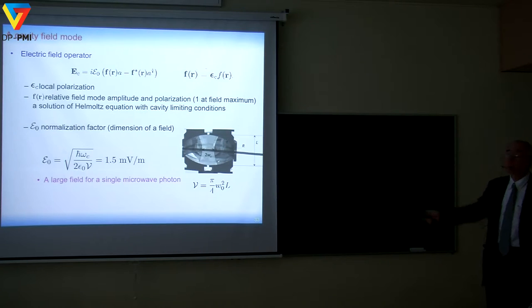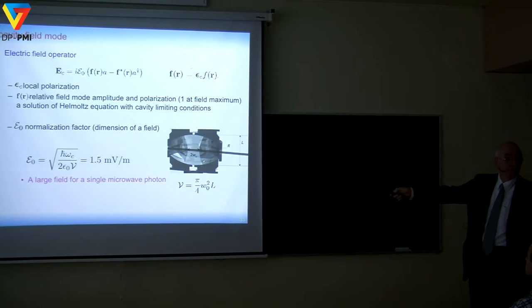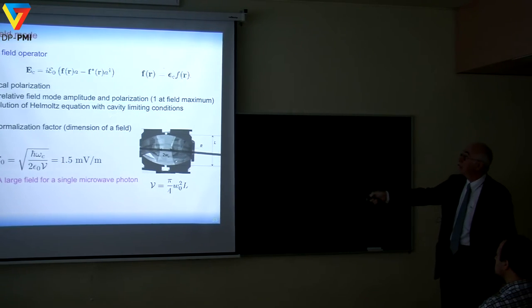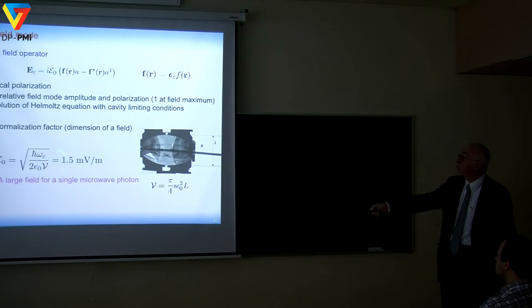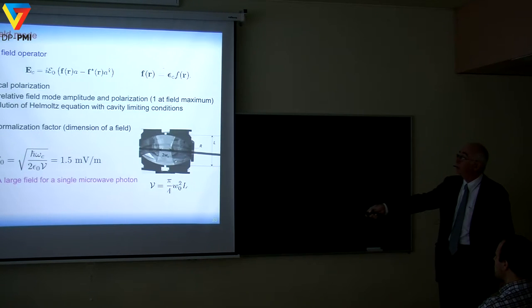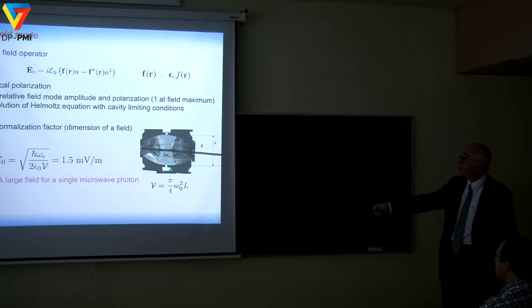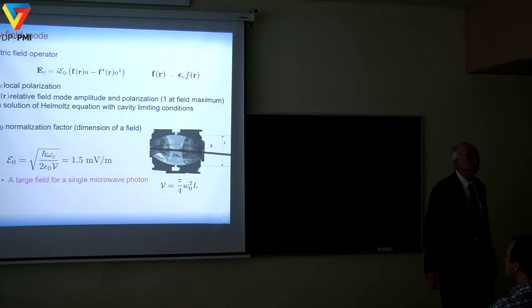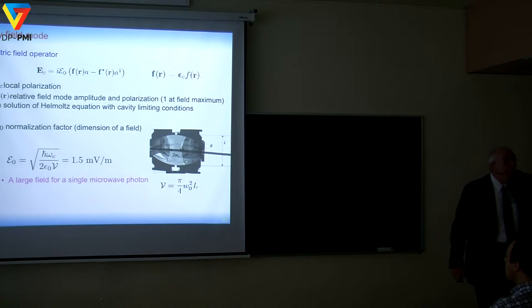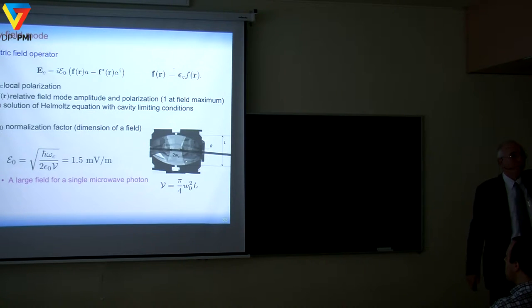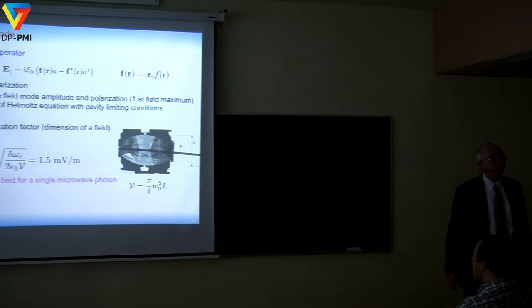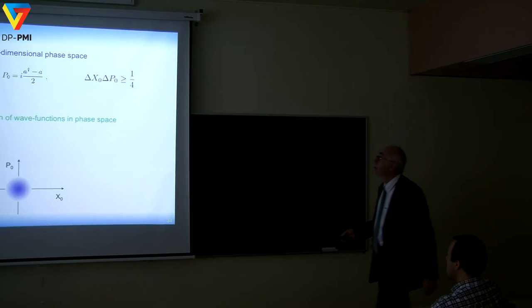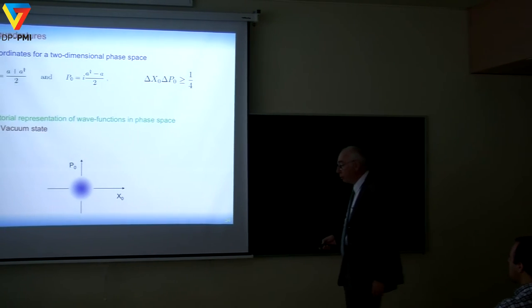E₀ — the normalization factor — is just given by the condition that the energy of one photon in the mode equals ℏω_c. In our cavities, to sustain the Gaussian mode structure, it's just millivolts per meter — a weak field in absolute terms, but very large for a single microwave photon. This is the key of cavity QED: E₀ is large. It's also useful to think in terms of position-momentum coordinates, or field quadratures — these are the operators x = (a + a†)/2 and p = (a − a†)/2i, which satisfy the Heisenberg uncertainty relation, and are dimensionless versions of the field.